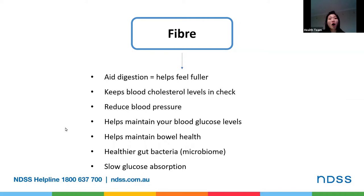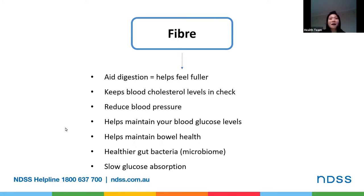Some carbohydrate-rich foods are also high in fibre. It aids digestion, helps you feel fuller, and keeps your blood glucose and blood cholesterol levels in check, which can keep your heart healthy. When you are living with diabetes, we have a three to four times higher risk of developing heart problems. So having adequate fibre in your diet will play a big part in delaying or preventing diabetes-related complications, such as heart problems. Fibre also helps reduce your blood pressure, maintain blood glucose levels, keep our bowels healthy, and provide healthier gut bacteria — or what you now commonly hear as the microbiome. Some types of fibre also help slow glucose absorption, and a higher fibre diet is also related to lowering the risk of some cancers.